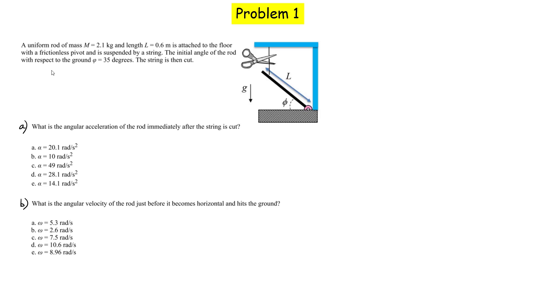Here's our first problem. We have a uniform rod that has a mass of 2.1 kg, a length of 0.6. It's attached to the floor down here with a frictionless pivot. It's also suspended by the string. The initial angle that this rod makes with respect to the ground is listed as 35 degrees. We then cut this string. So the first question we have is, what is the angular acceleration of the rod? We're looking for the value alpha. How do you find alpha?